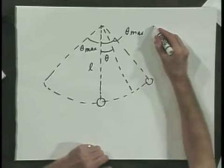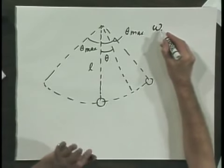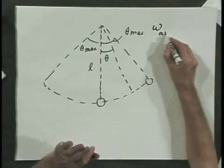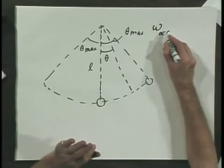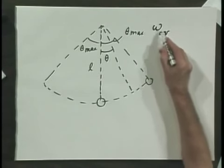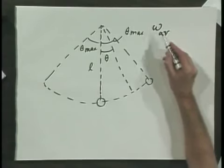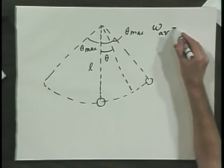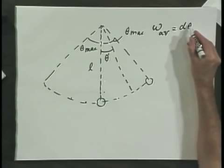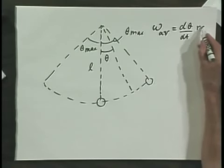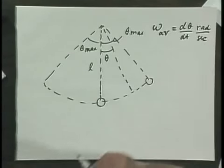The angular velocity, for which we write omega in physics — I will put 'av' there so you always know which omega I'm talking about — by definition is dθ/dt, and this is in radians per second.